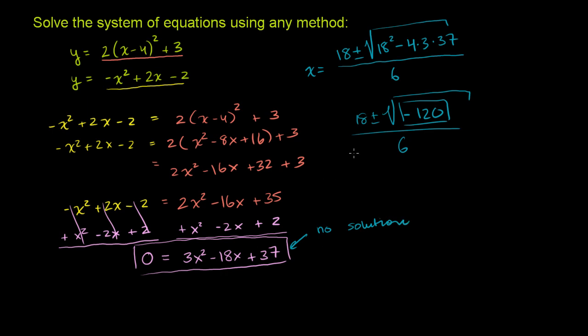And if we wanted to, we could have just looked at the discriminant, the discriminant is this part, b squared minus 4ac. We see the discriminant is negative. There's no solution, which means that these two guys, these two equations, never intersect. There is no solution to the system.